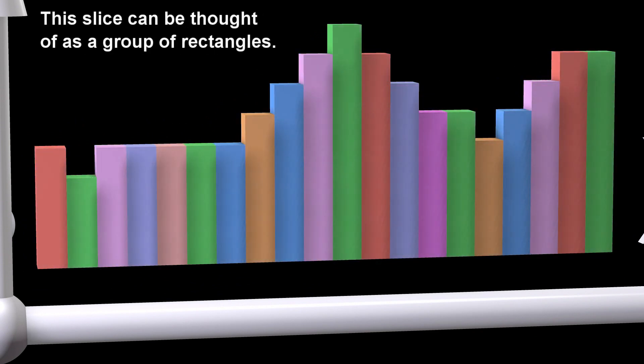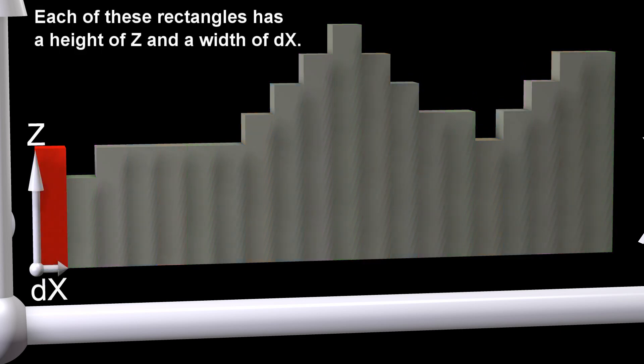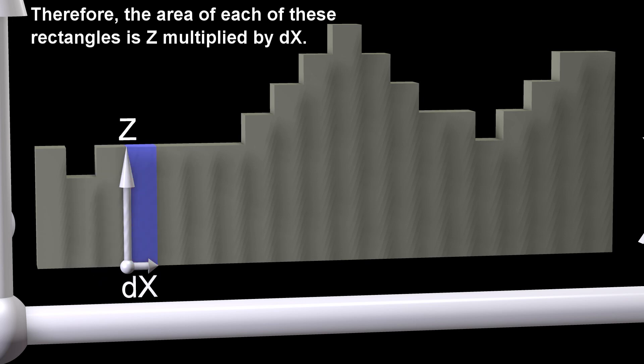This slice can be thought of as a group of rectangles. Each of these rectangles has a height of Z and a width of DX. Therefore, the area of each of these rectangles is Z multiplied by DX.